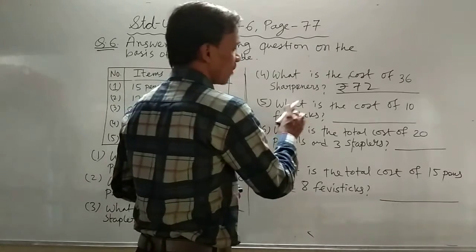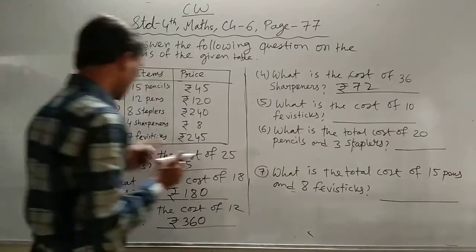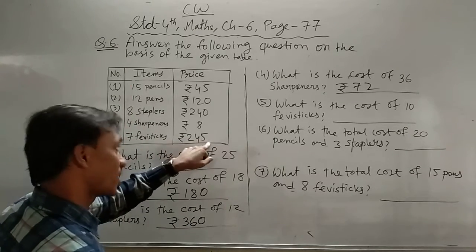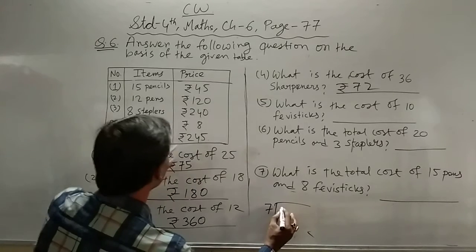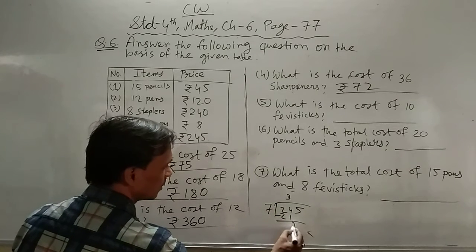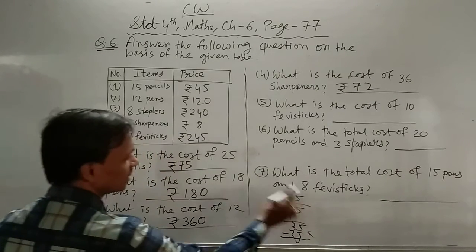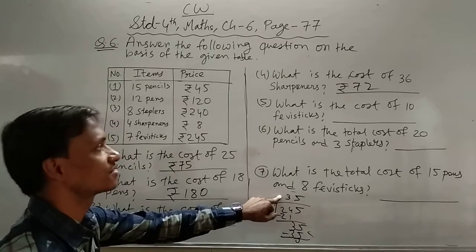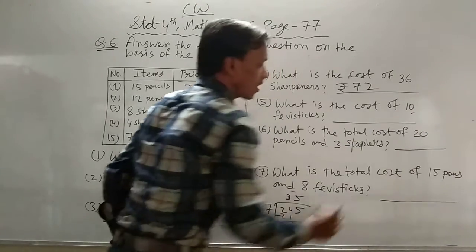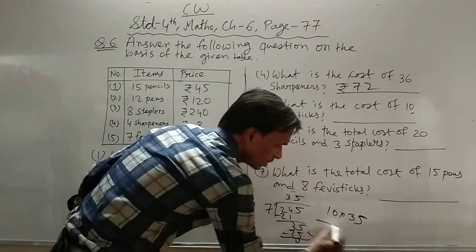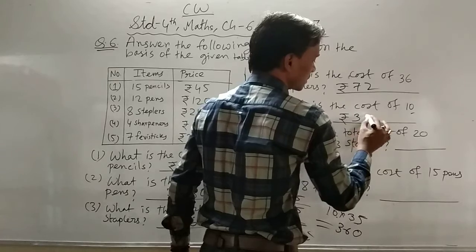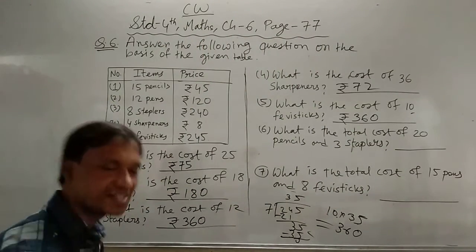5th question: What is the cost of 10 fevisticks? 10 fevisticks का cost क्या है? 7 fevisticks का cost 245 rupees, तो 245 को 7 से divide करो: 7 threes are 21, minus 21 = 35, 7 fives are 35, answer 35. एक fevistick का cost 35 rupees। तो 10 fevisticks का cost: 10 into 35 = 350 rupees। Answer: 350 rupees।